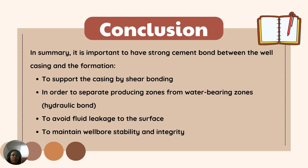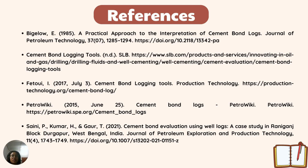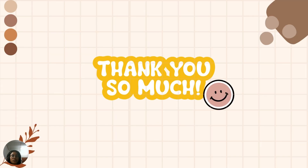Moving to the conclusion, in summary, it is important to have a strong cement bond between the well casing and the formation: to support the casing by shear bonding; to separate the producing zones from water-bearing zones; to avoid free leakage to the surface; and to maintain wellbore stability and integrity. These are the references used for this project. Thank you.